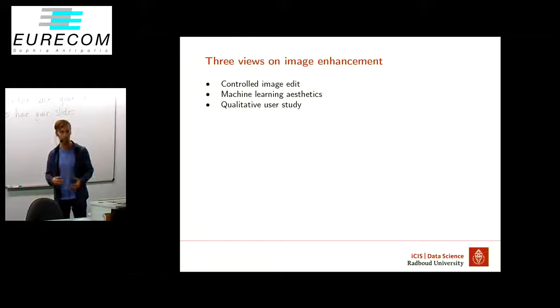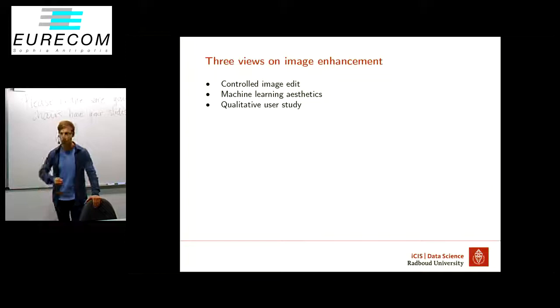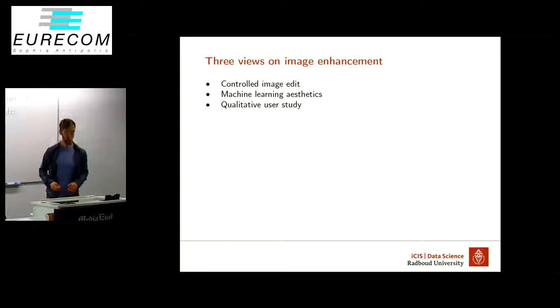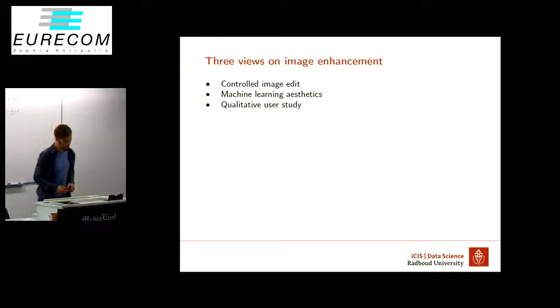The controlled image edit comes from the field of photography and aesthetics — what do we already know from artists that we can apply to increase the image appeal? For example, applying the rule of thirds or playing with color harmonies. Zuran also mentioned the system Google NEMA, and there are more efforts to predict aesthetic ratings from images using neural approaches.